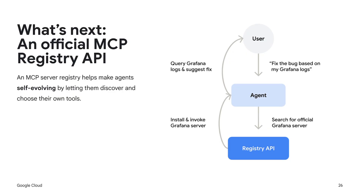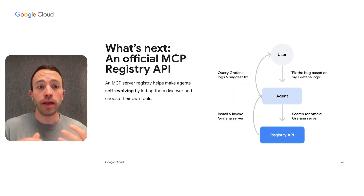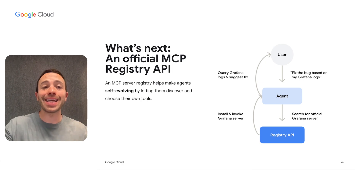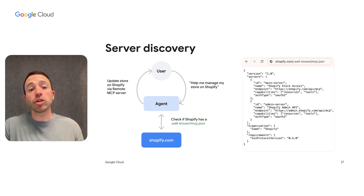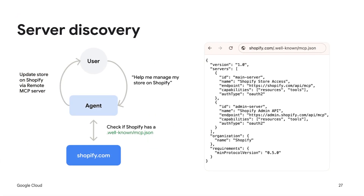If the agent needs a long connection, it can maintain that. Otherwise, it can use those tools — define, consume, authenticate if needed — and be done. This ability for the registry API to allow for self-evolving agents makes this so much more powerful than just a static resource for agents to consume tools. For example, a user might ask the agent: 'Help me manage my store on Shopify.' Instead of the agent being given all the tools necessary upfront, the agent first checks to see if Shopify has dedicated and trusted MCP servers. Once it does, it sees what capabilities are exposed, what authentication is required, sends it back to the user, the user authenticates properly, and then the agent has access to the tools, resources, and data it needs to perform an action.